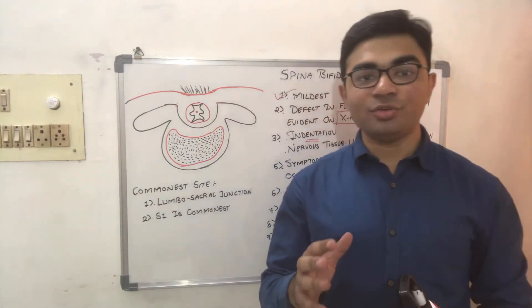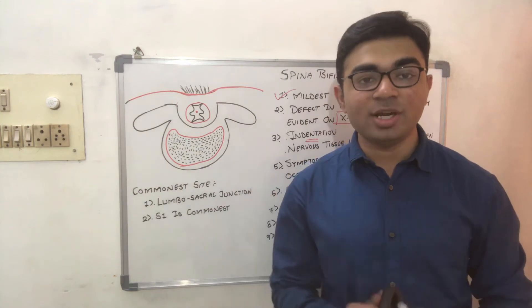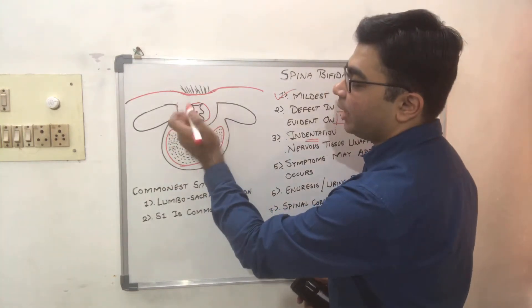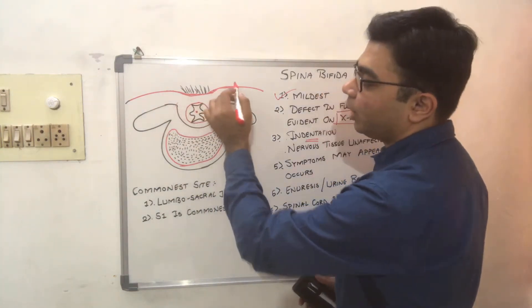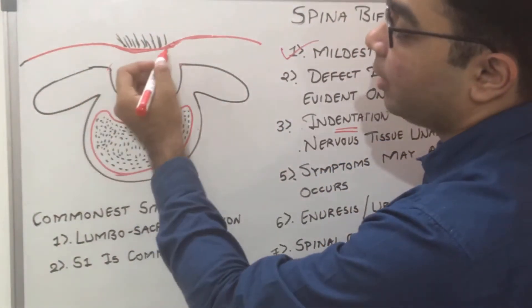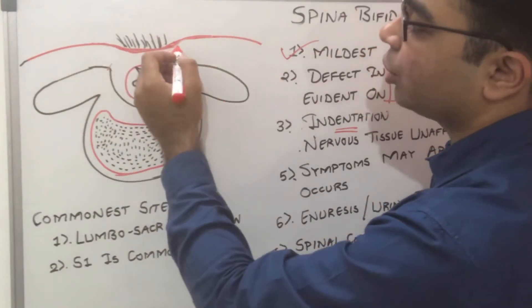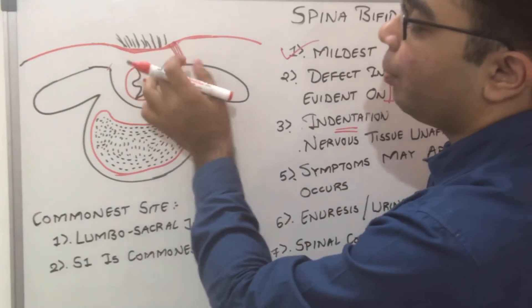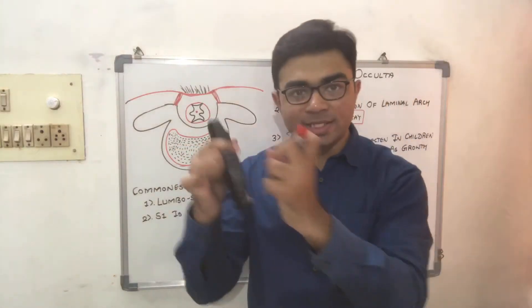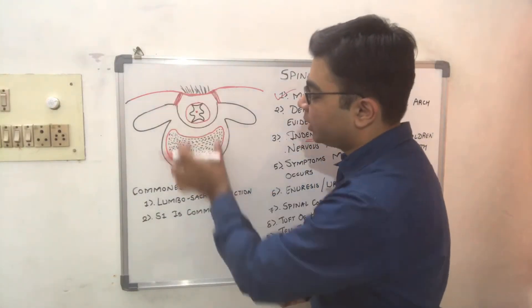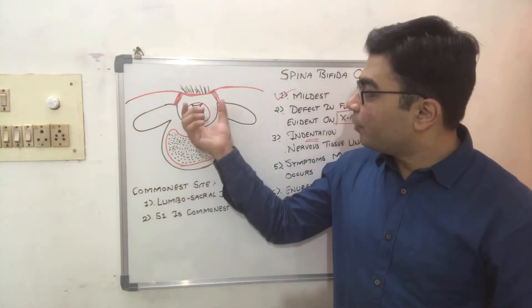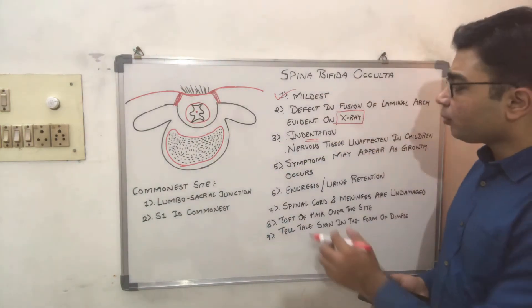The indentation or pit seen on observation is caused by fibrous bands present between the bone and the skin. These fibrous bands pull the skin in the anterior direction — that is, toward the vertebral body — resulting in a visible pit or indentation when assessing the patient.